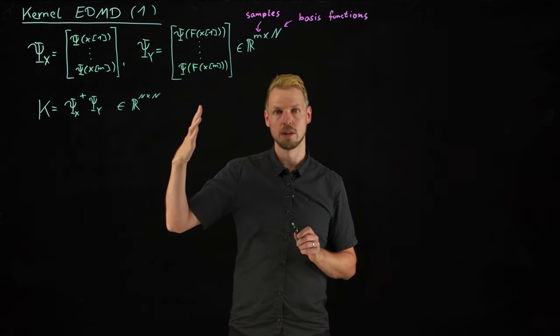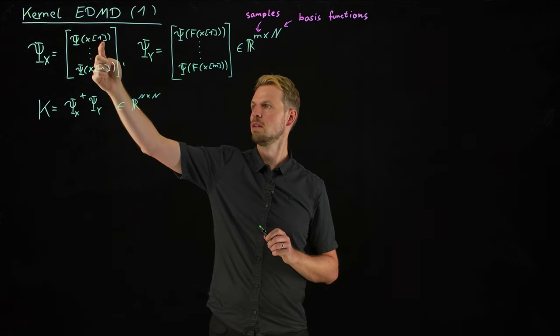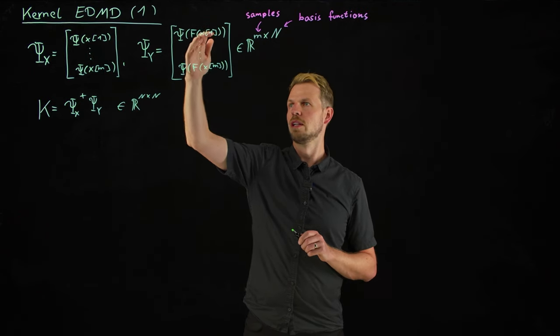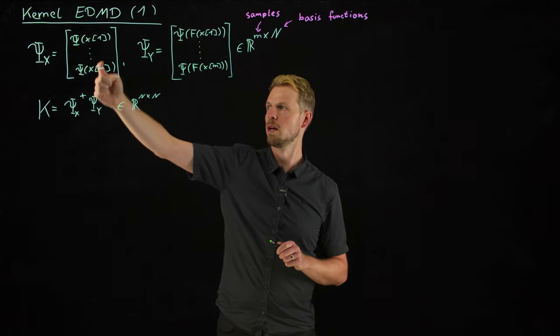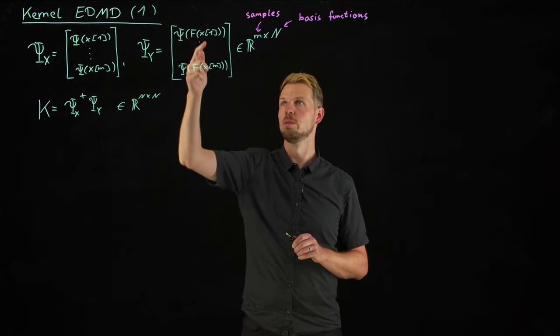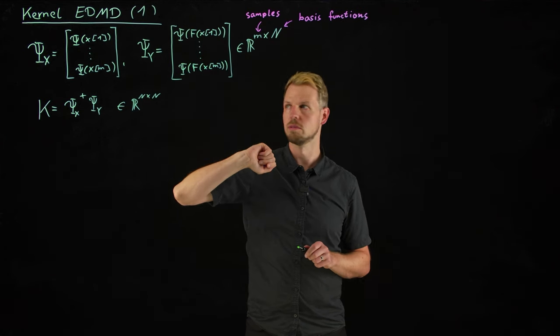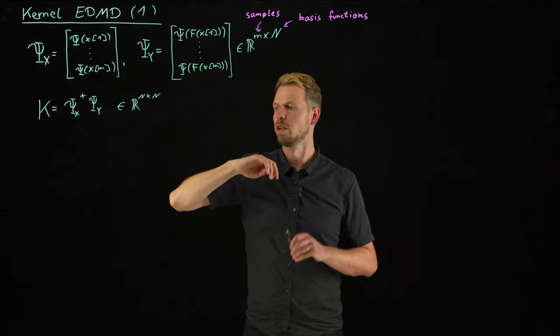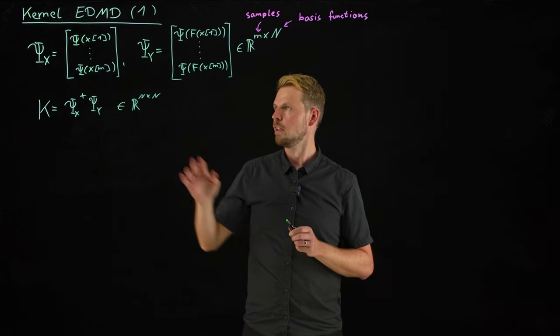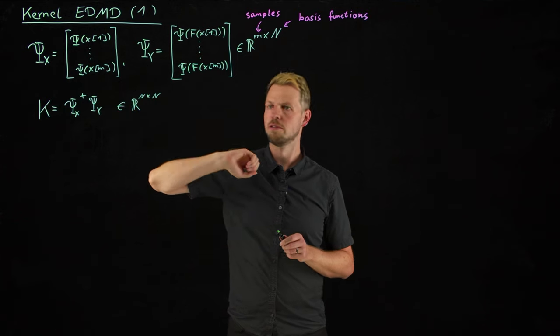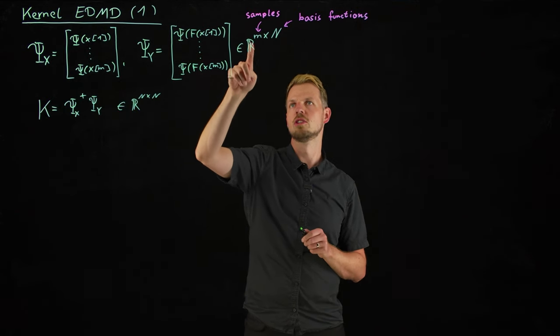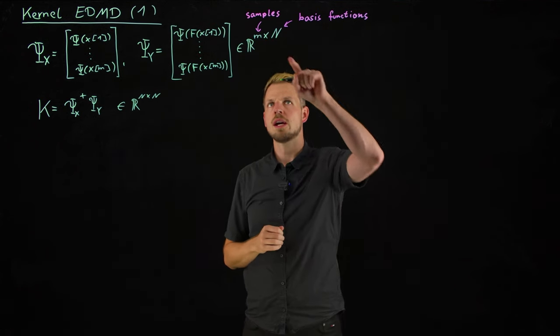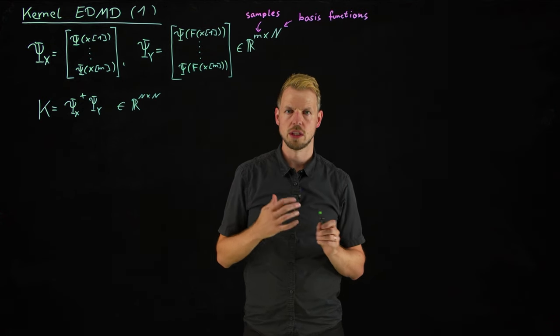So what we always start with in the EDMD setting is a trajectory of m samples, can be one time series, can also be different time series, plus for each of these samples the consecutive time step. So if this were one to m a time series, one long time series, this would be two to m plus one of the same time series. And then we construct by lifting in this dictionary, monomials, Laguerre basis functions, Hermite polynomials, we have seen all these. We lift these individual samples to this large feature matrix. And so I've written here that both of these matrices are of dimension m by n, where lowercase m is the number of samples, so the rows in this matrix, and the capital N is the number of basis functions that we are considering.